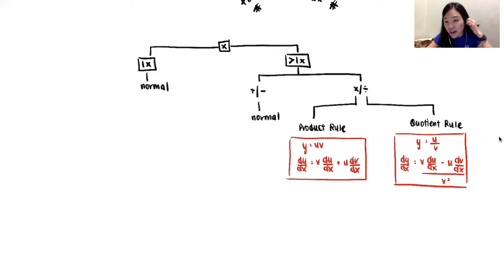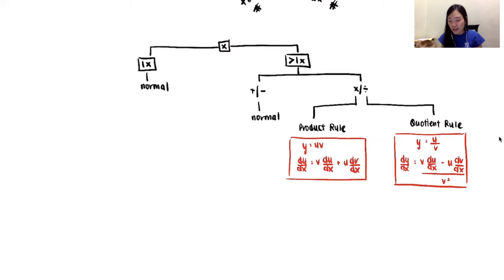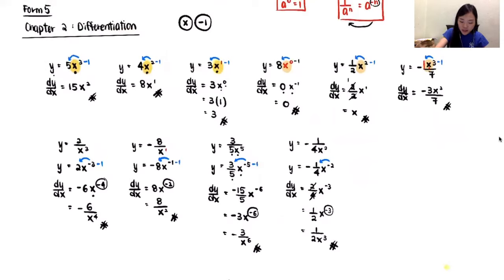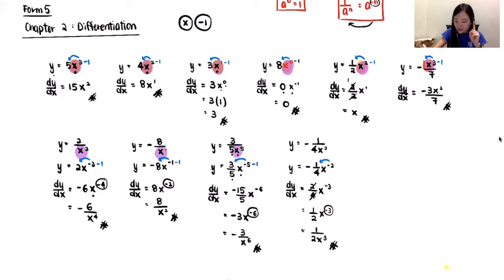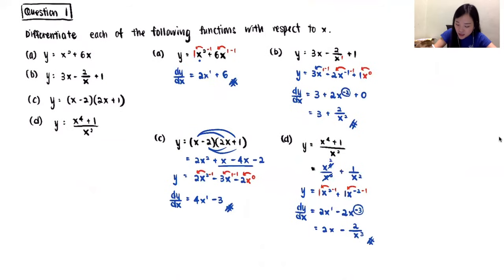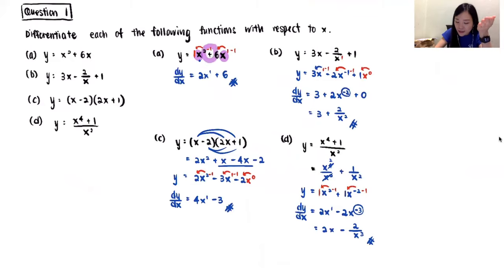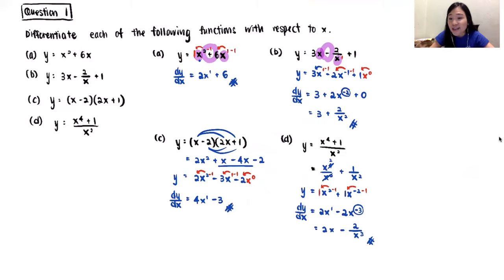Based on my previous video, look at my examples — do you realize that in the previous video all the examples I differentiated only had one x? Because they only had one x, we just used the normal method: times and minus one. What if they have more than one x? Look at this example — this equation has two x's. Based on what I said, you check whether they are in a plus/minus relation or a times/divide relation. These ones are plus and minus relations, so you use the normal method — exactly what we did last video.